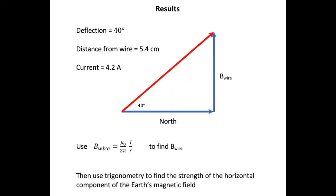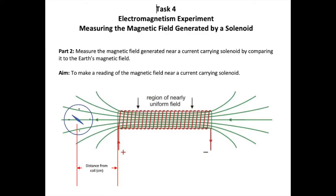So to sum up part 1, we have a 40 degree deflection. We're at 5.4 cm from the wire and the current flowing through the wire is 4.2 amps. Because the two fields are perpendicular, we can use a vector diagram, the magnetic field strength equation, and a little bit of trig to figure out the Earth's magnetic field.